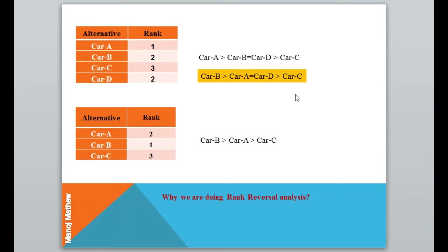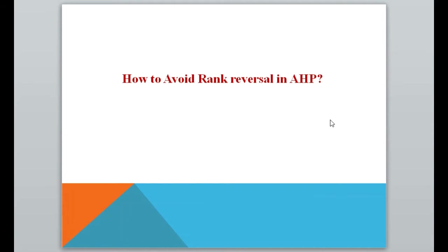Ideally the rank should be car B greater than car A, and both greater than car C — this is the ideal rank. In our example we knew that car B and car D have the same specification. But if you didn't know this, how would you justify that you have landed up with the correct ranking order? For this reason, researchers do rank reversal analysis.